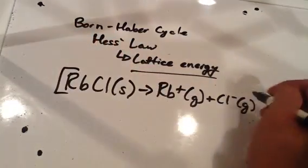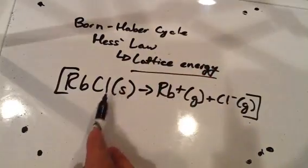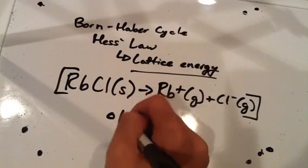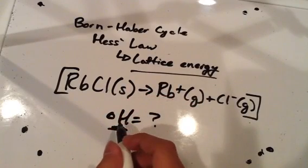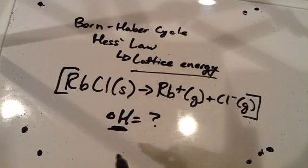If we were given a certain set of information, we should be able to cancel things out and then at the end end up with this as well as a certain amount of energy. This change in enthalpy is actually going to be our answer. That's going to be our lattice energy.